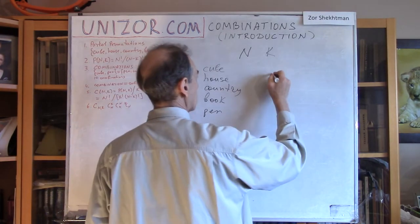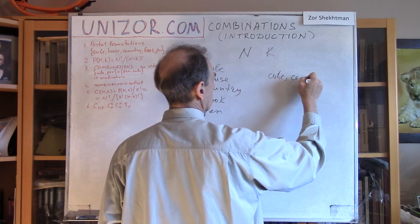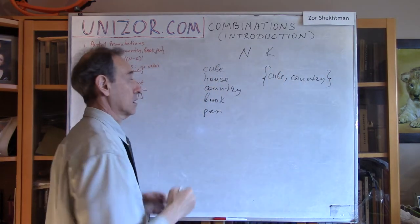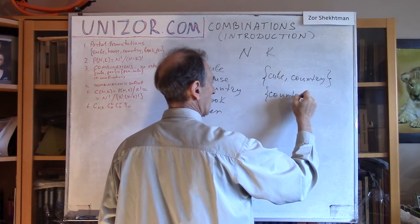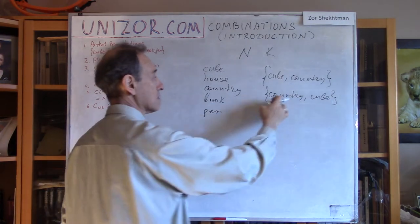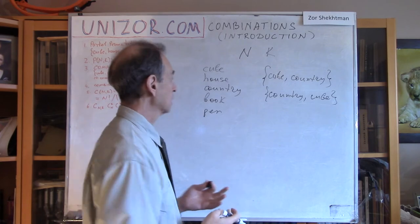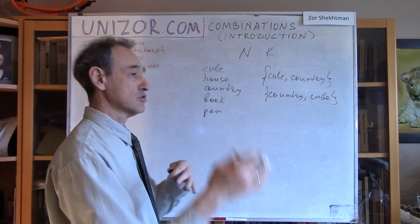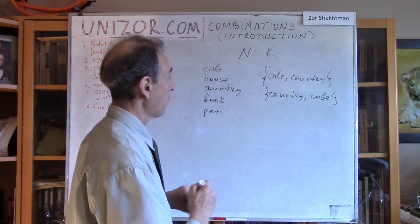You can always have the combination cube and country, and you can also choose country and cube. These are two different partial permutations, because there is a different order of these two. Similarly, you can choose house and country, and you can choose country and house — and these are two different partial permutations.